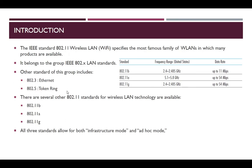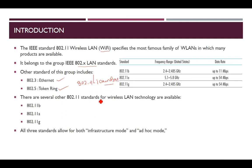We know that 802.11, which is sometimes called Wi-Fi or wireless LAN, is the most popular family of wireless LAN technology. The IEEE 802.X LAN standards are also popular. There are several 802.X LAN standards — for example, 802.3 is called Ethernet, 802.5 is called token ring, and 802.4 is called token bus. The 802.11 wireless LAN standard also belongs to this group.